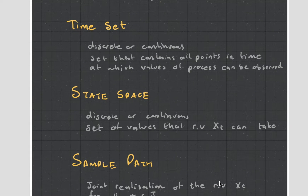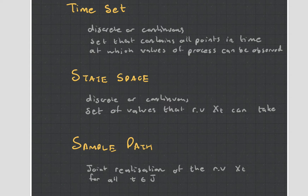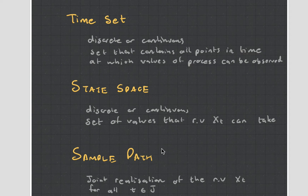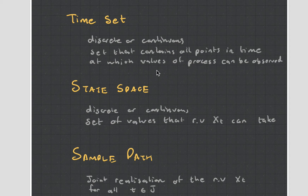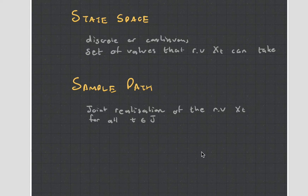There's the time set, state space, and sample path. A sample path is just like an example — like when I said 6, 3, 4, 2, 5. That's a sample path of rolling the dice. The state space will be 1, 2, 3, 4, 5, and 6, because those are the different values the dice could take on. The time set, if I'm rolling every single second, would be discrete. If it changes every millisecond continuously, that's continuous. A stock share on the stock market has a continuous time set.